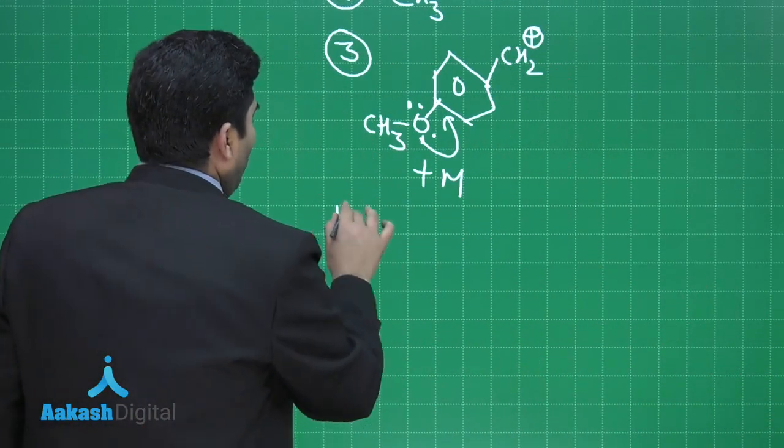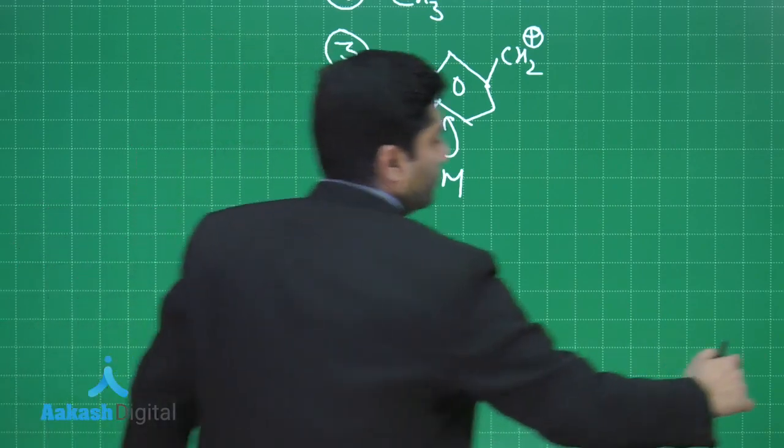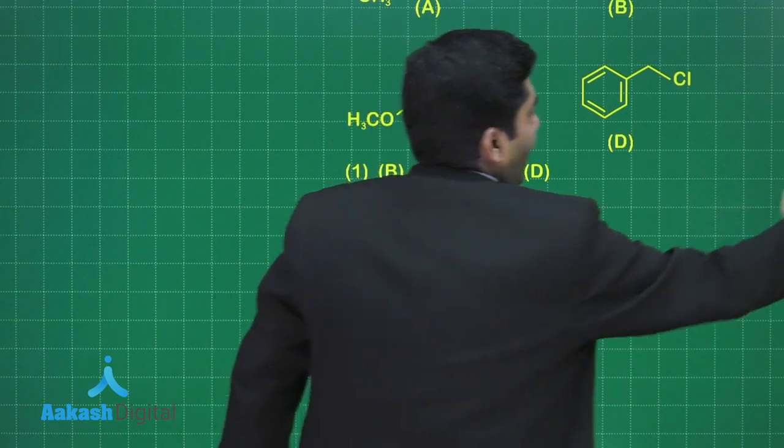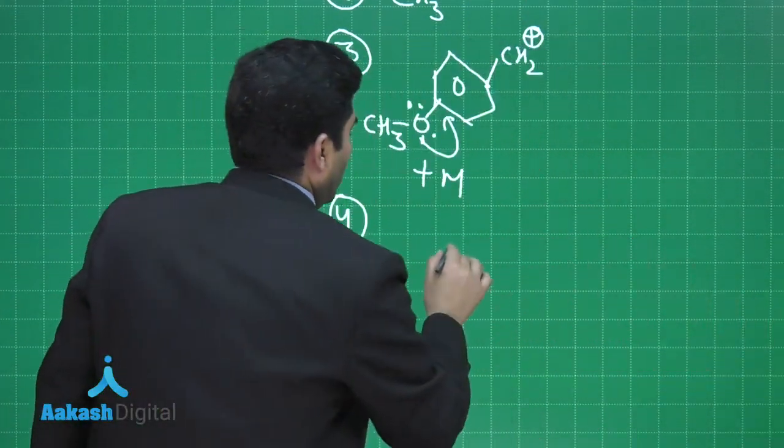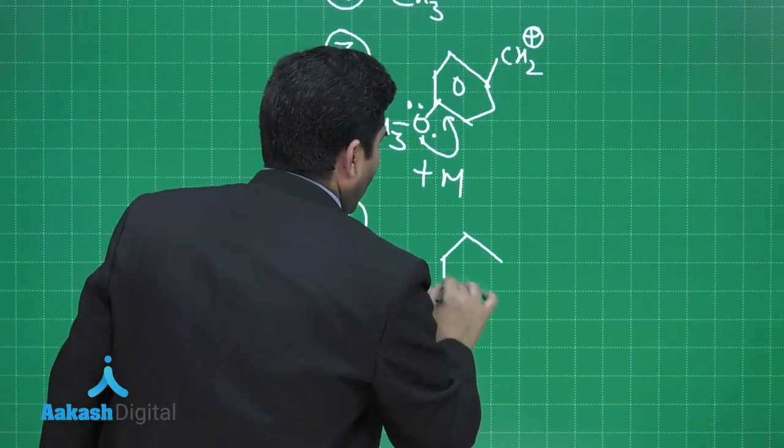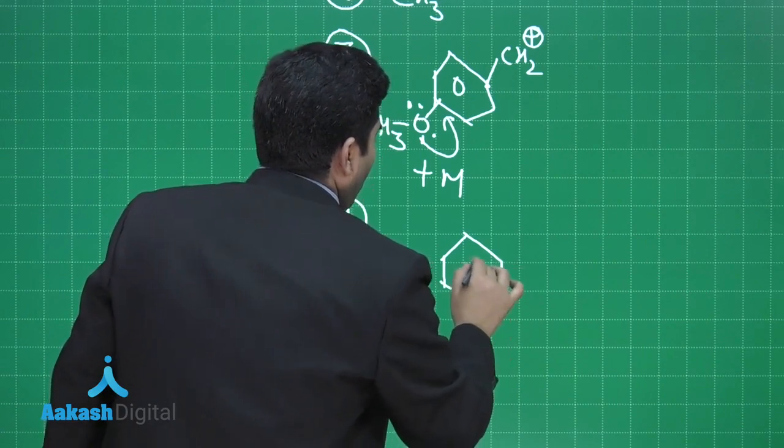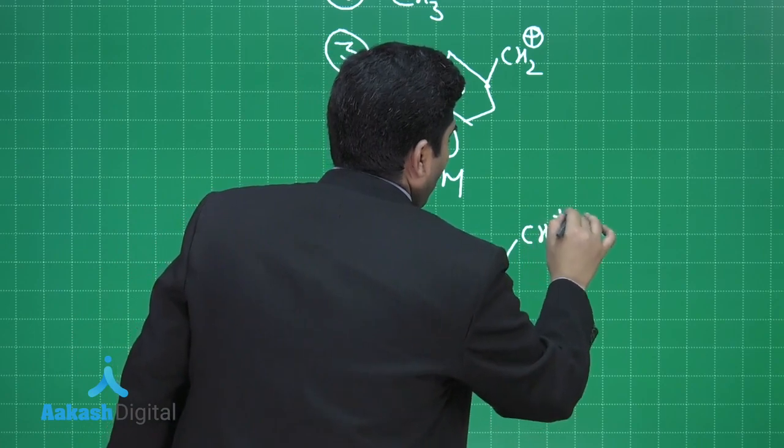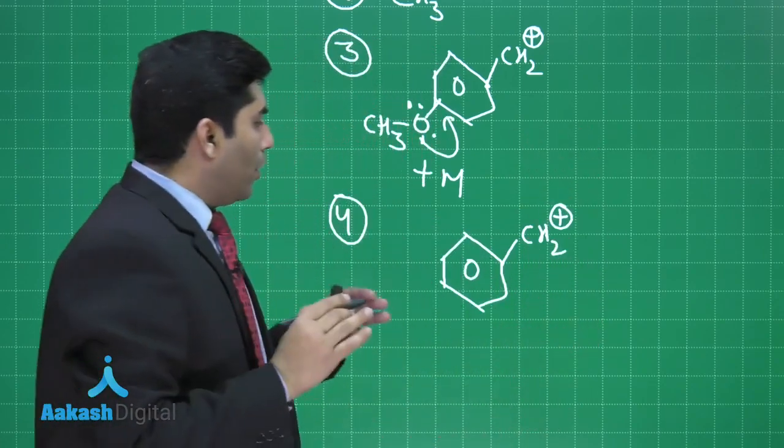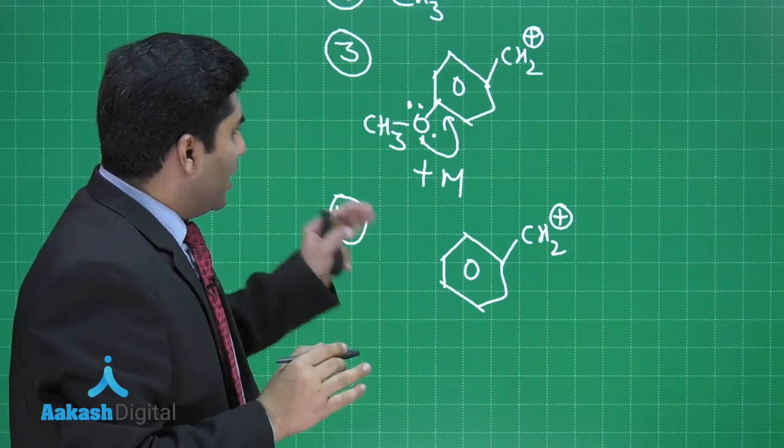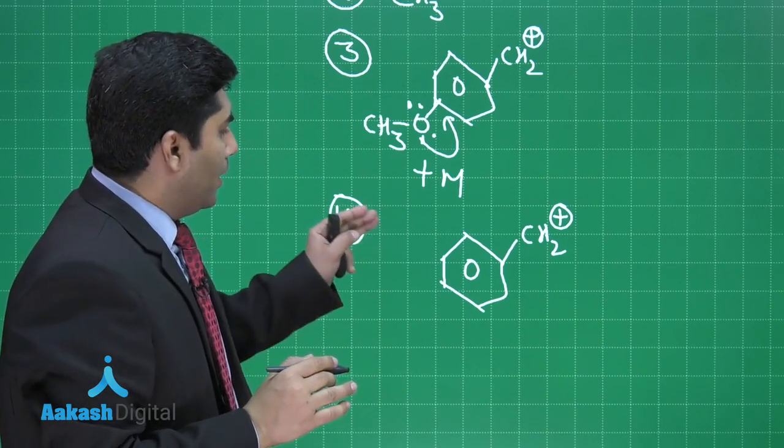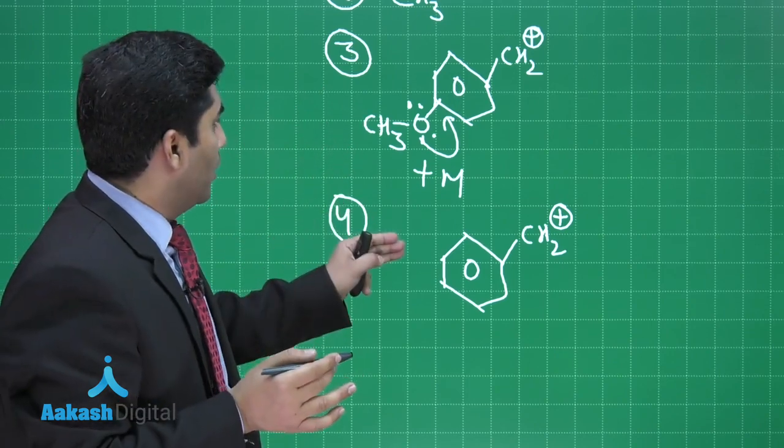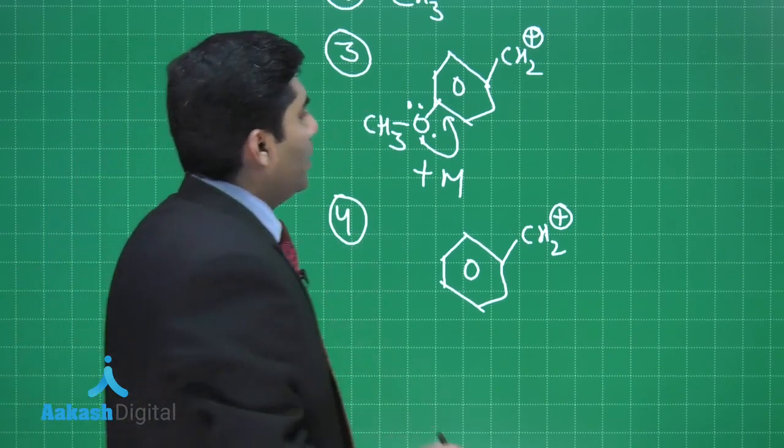And the next one, the fourth one is benzyl chloride and nothing is attached. So it will be the benzyl carbocation after the removal of chlorine. This will also be resonance stabilized, but the third one will be more stable than the fourth one.